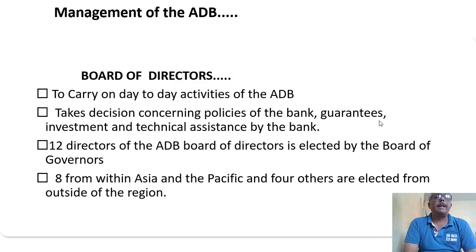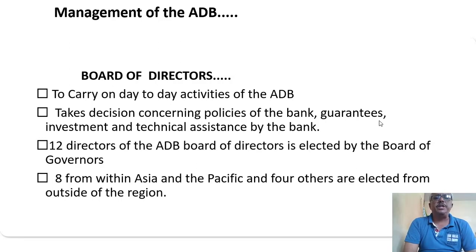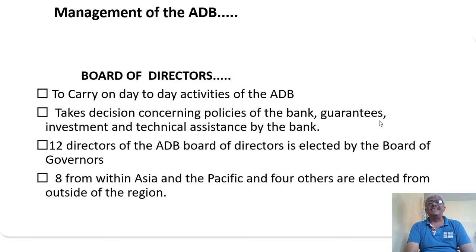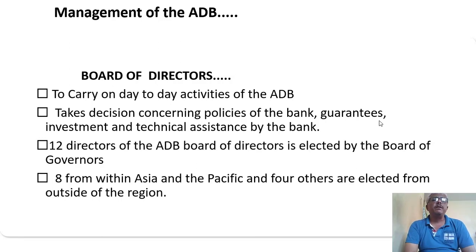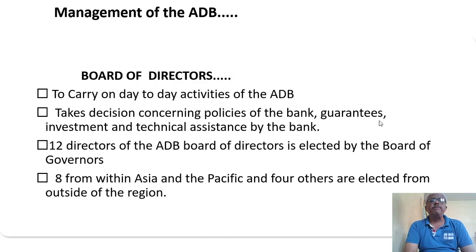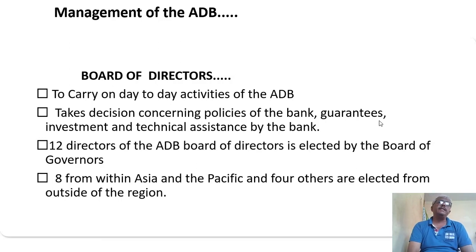The Board of Directors carries out the day-to-day activities of ADB, takes decisions concerning policies of the bank, guarantees, investment, and technical assistance. Twelve directors of the ADB Board of Directors are elected by the Board of Governors — 8 from within Asia and the Pacific, and 4 from outside the region.